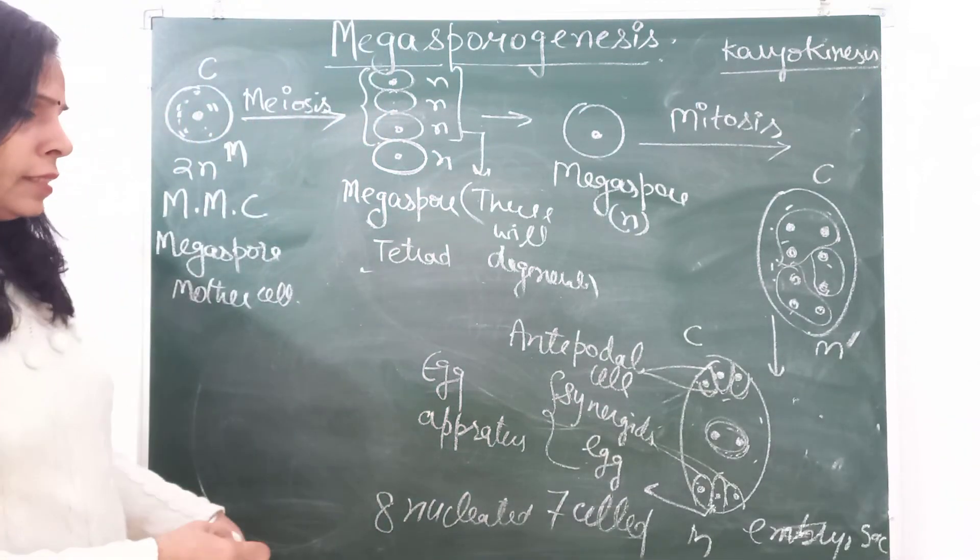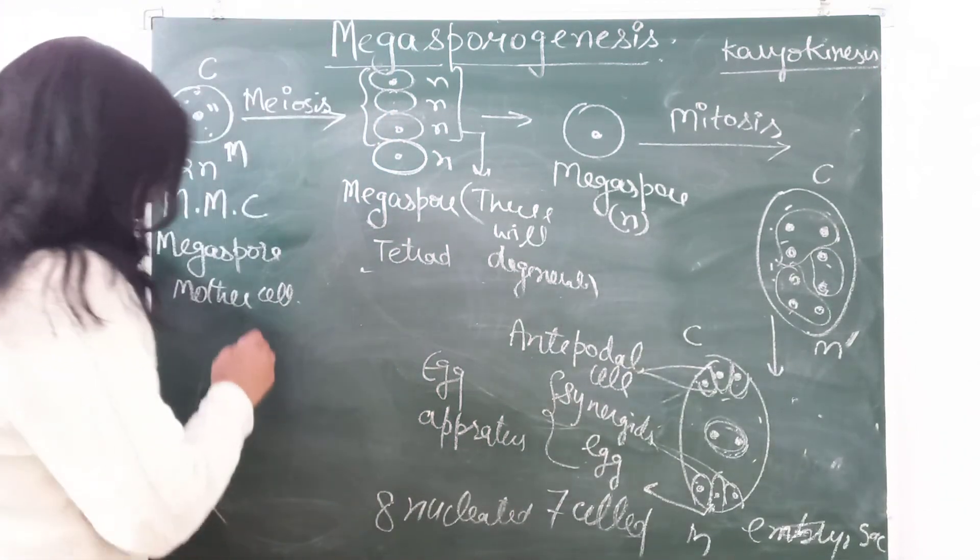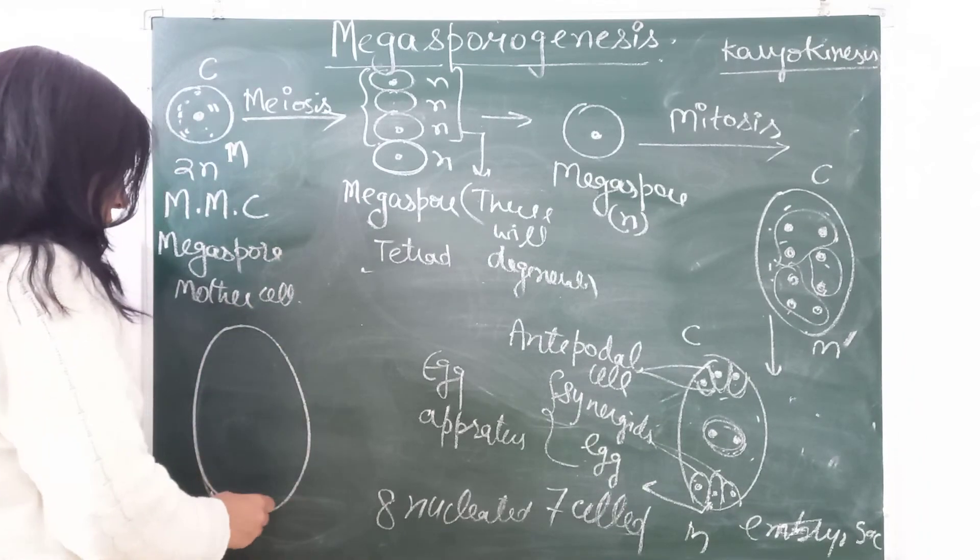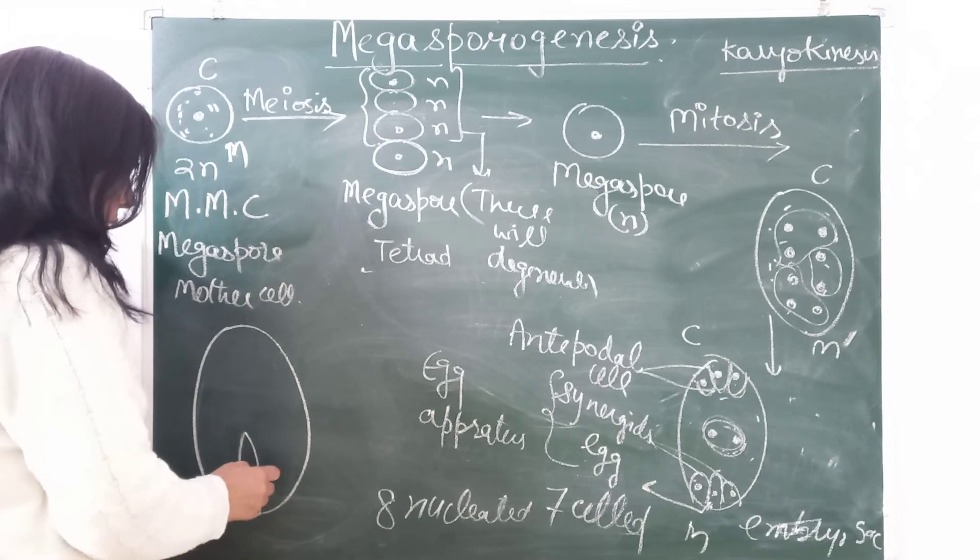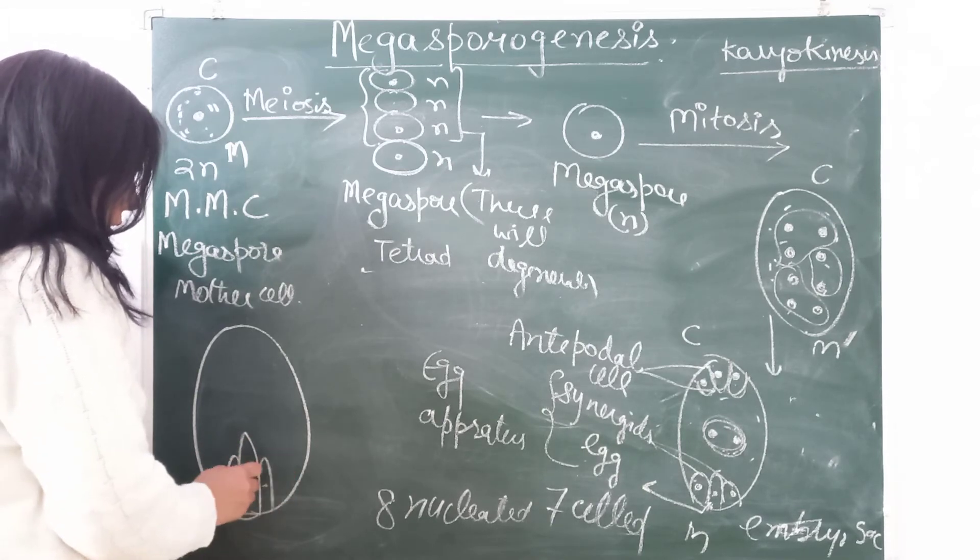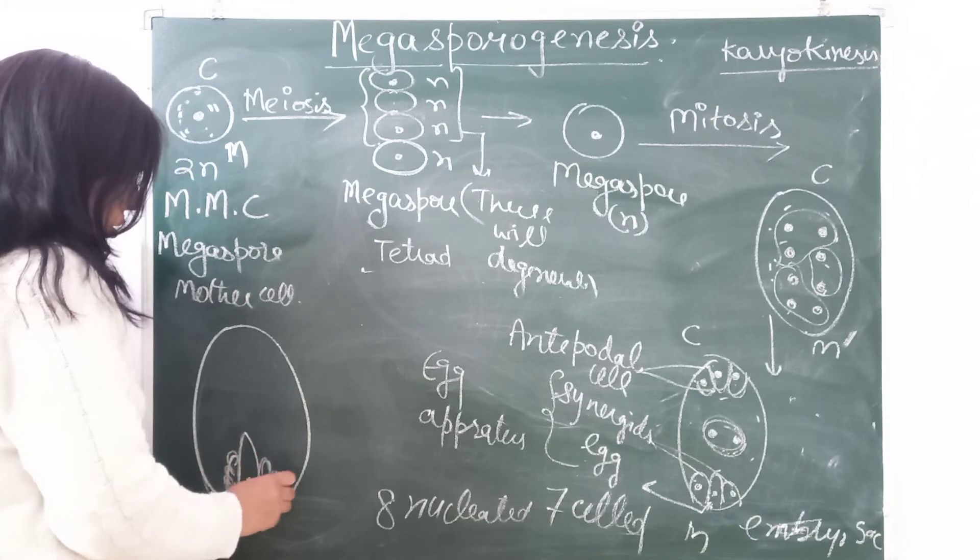And these synergids, let me draw it here fairly. Now, the complete structure which you are having: embryo sac. Central is egg. There are synergids. Synergids have some finger-like structure, filiform apparatus.